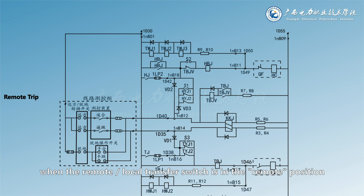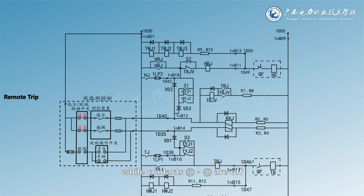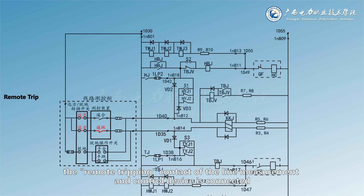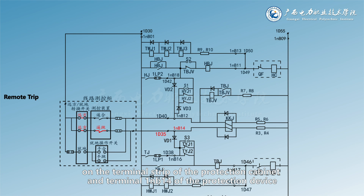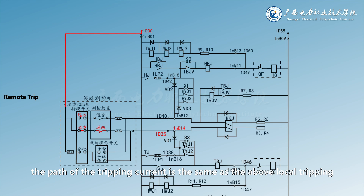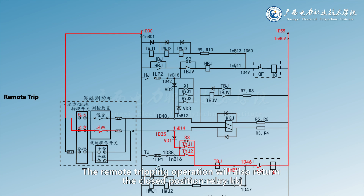For remote tripping, when the remote/local transfer switch is in the remote position, its contacts 1-2 and 5-6 are on, while contacts 3-4 are off. After receiving the tripping command, the remote tripping contact of the line measurement and control device is connected, and the positive power supply is also sent to terminal 1D35 on the terminal strip of the protection cabinet and terminal 1NB14 of the protection device. The path of the tripping current is the same as the above local tripping, so as to complete the remote tripping operation. The remote tripping operation will also return the closed position relay KKJ.